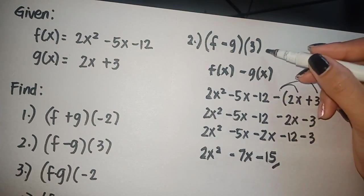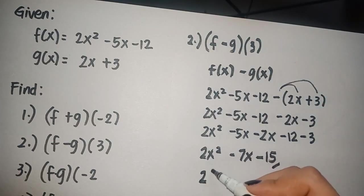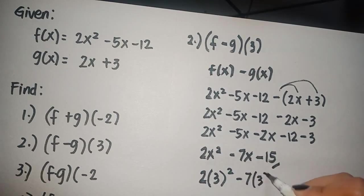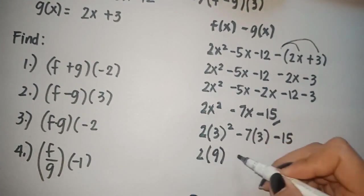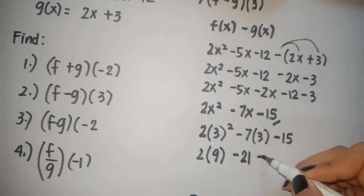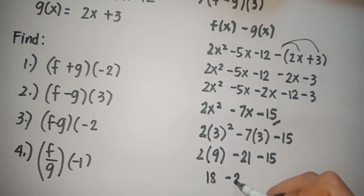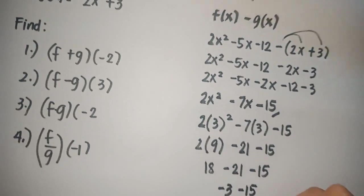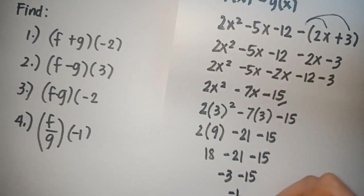For the last step, change the value of x with positive 3. Sorry for the noise. So we have 18 minus 21 minus 15. We're almost there. So we have negative 3 minus 15 equals negative 18.